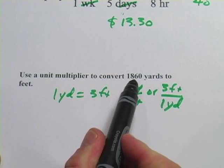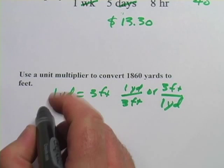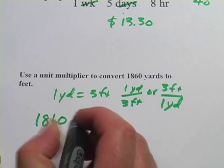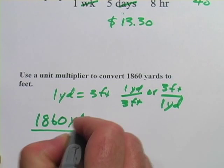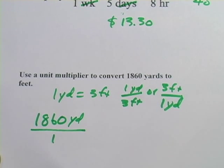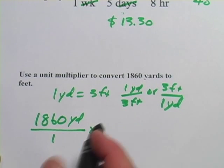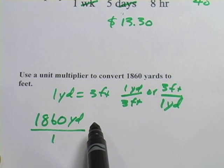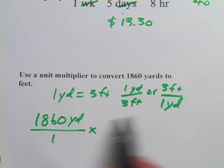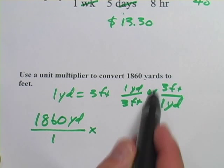Now let's set up the problem. It says convert 1,860 yards. So we're starting with 1,860 yards, put that over a one to turn it into a fraction. Then we're going to multiply it by one of these unit multipliers. You want to pick the one that, if you start with yards on the top, will have yards on the bottom so it can cancel, and that's this one.